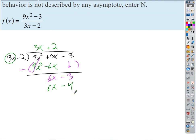And I'm going to subtract the whole thing. 6x minus 6x cancels. Negative 3 minus negative 4 is 1. So we end up with positive 1 is our remainder, right?